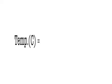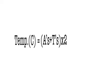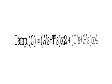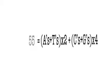To make sure we were correct, we plugged our sections into the equation: temperature equals (A's + T's) × 2 + (C's + G's) × 4. If the section works, we would have it sent to a lab to be fabricated.